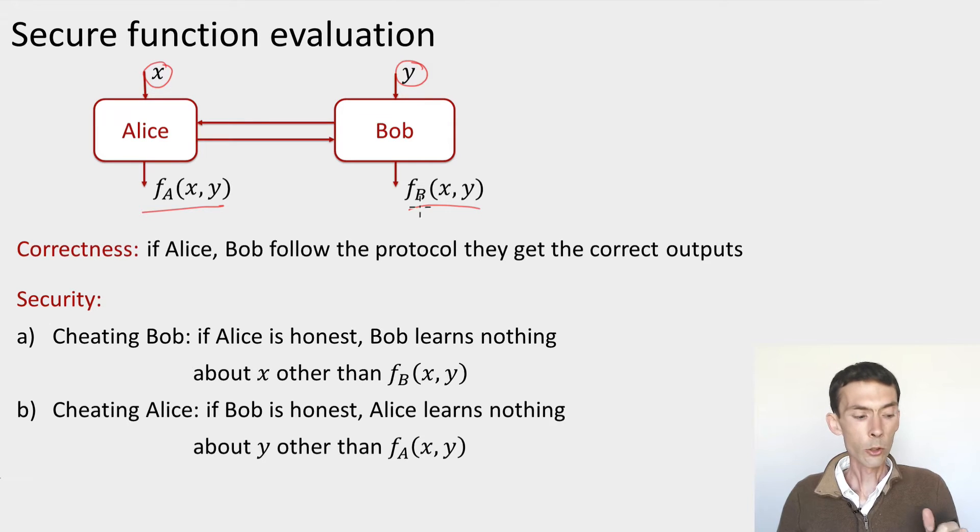Now we want to set up some security requirements. And what are the security requirements? Well, informally, we want Alice and Bob to compute their functions in a way that leaks the least possible amount of information about each other's inputs. So security is defined in two steps for cheating Bob and cheating Alice. It's analogous in both cases. Let's look at cheating Bob. What we want is that if Alice is honest, meaning she behaves exactly as the protocol states that she should behave, then whatever Bob does, there is no way for him to learn any information about Alice's input X